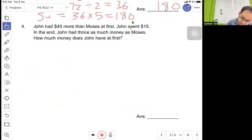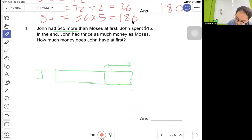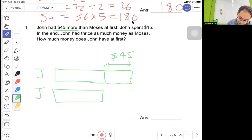Question 4: John has $45 more than Moses at first. So John has $45 more. John spent $15.